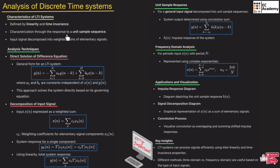This LTI system can be characterized by taking the response to a unit sample sequence. The unit sample sequence is nothing but the impulse sequence or impulse function. We will take the impulse sequence as input and then characterize the linear time invariant system, which will be in discrete form.